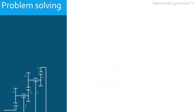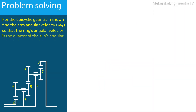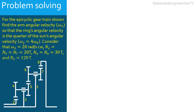In this problem, we are asked to determine the angular velocity of the arm in the planetary gear train shown, so that the ring's angular velocity will be one quarter of the sun's angular velocity. The angular velocity of the sun is given and is equal to 20 radians per second clockwise. Also given are the number of teeth of the sun, the planets, and the ring.